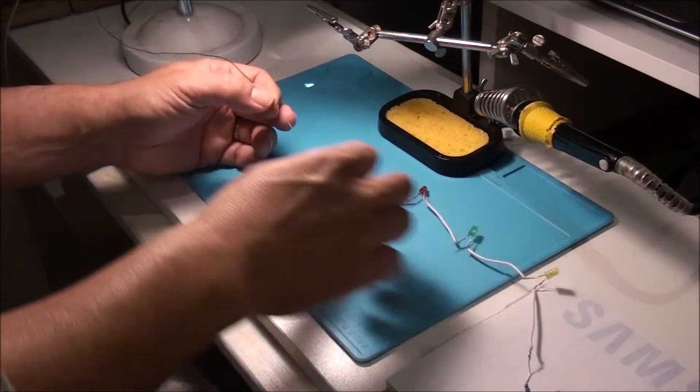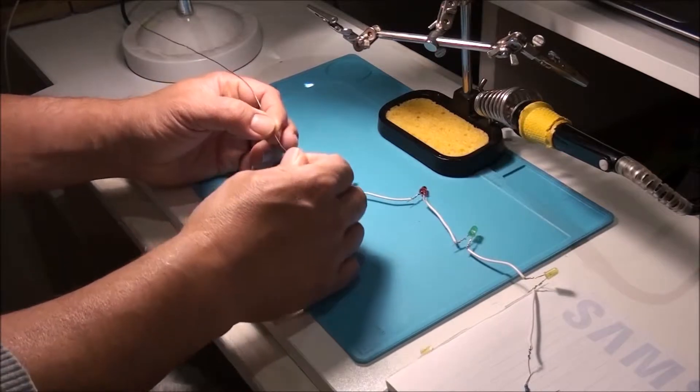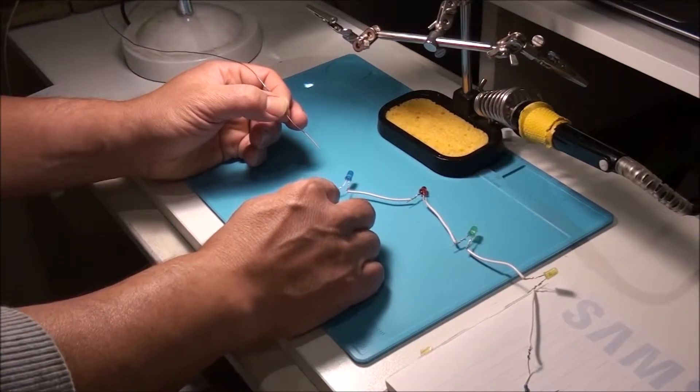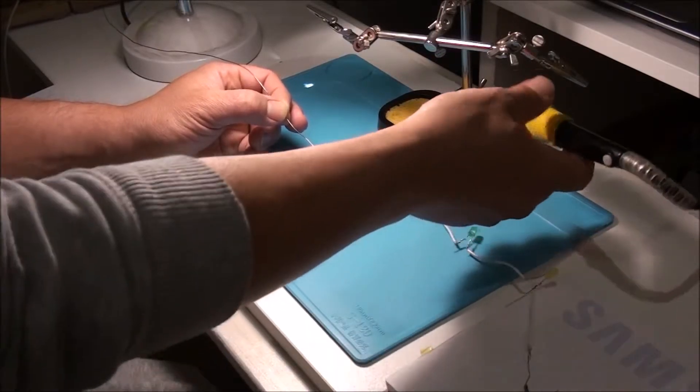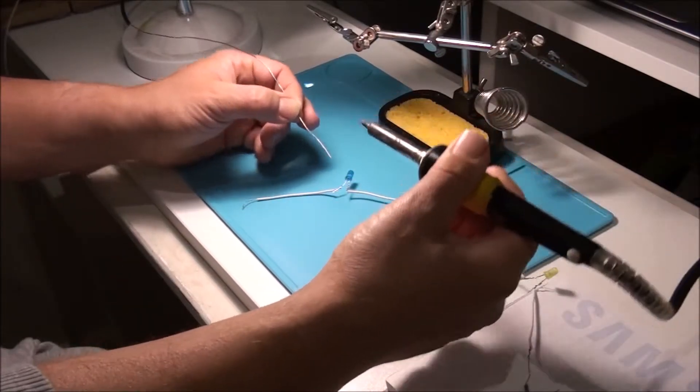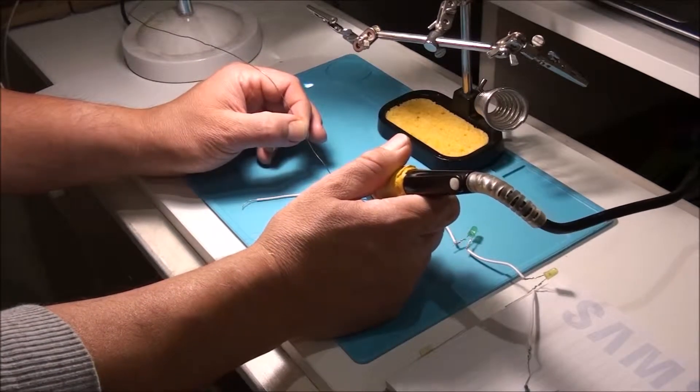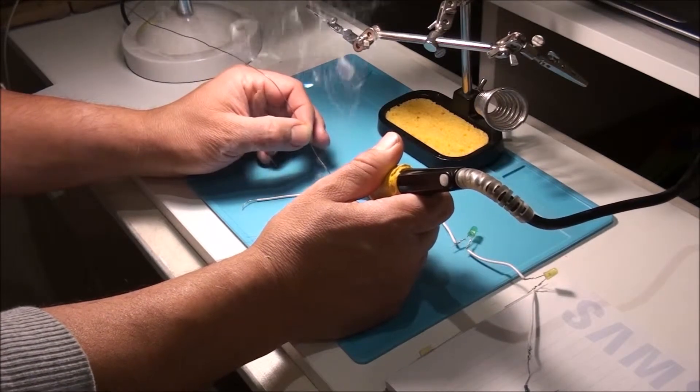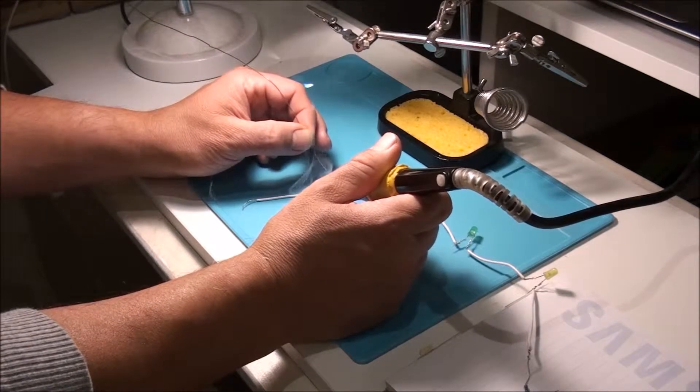All you need to do is just add a bit of solder to make a solid connection between the wire and the component. So this is already hot and I'll do this one like this. As you can see, the solder melts very quickly.